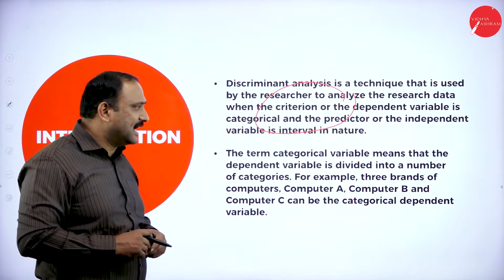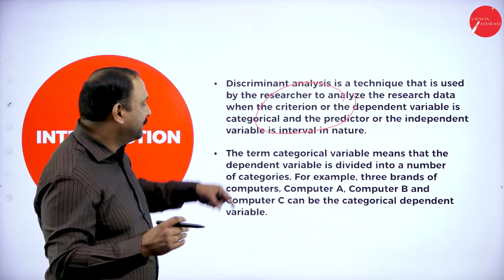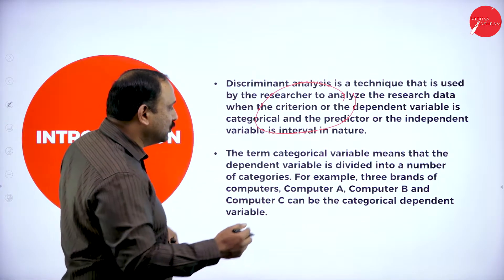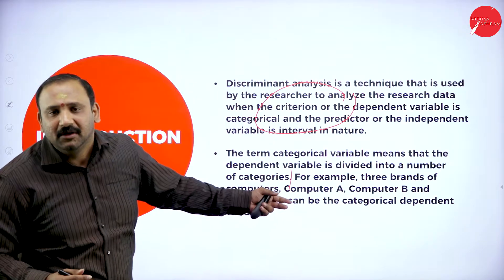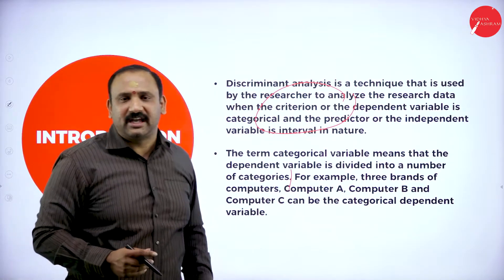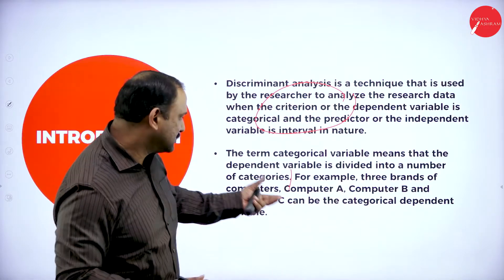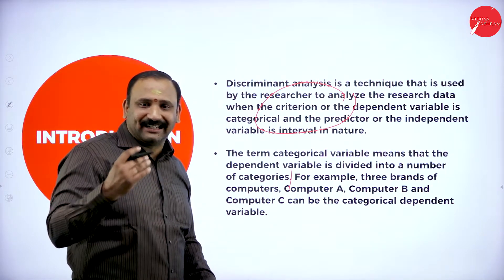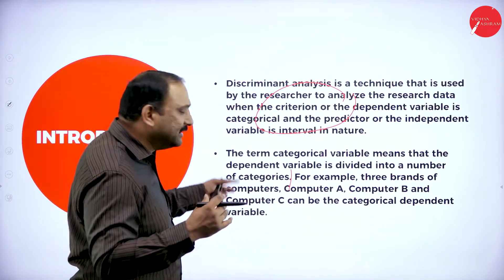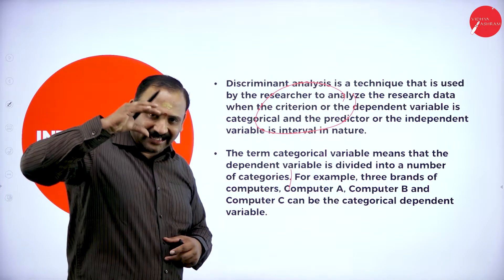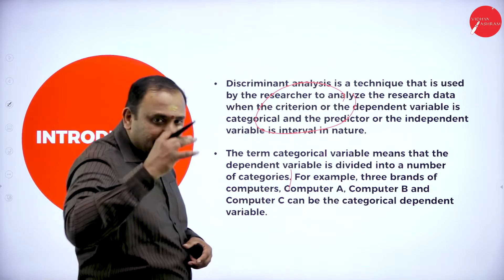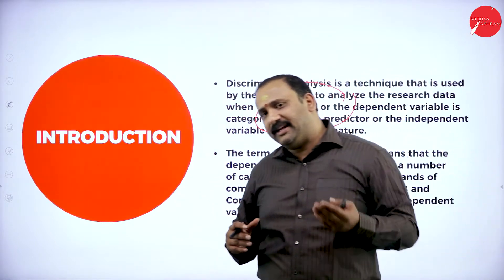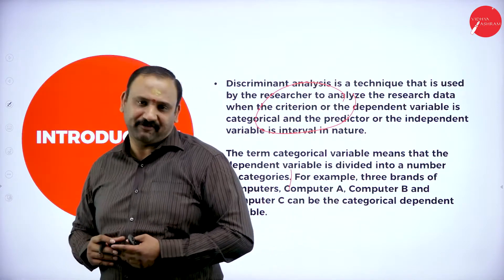The term categorical variable means that the dependent variable is divided into a number of categories. For example, we have taken computer scale categories A, B, and C. Computer A, computer B, and computer C can be categorized as the dependent variable factor. We are trying to categorize the data and then analyze whether the variable is dependent or independent.